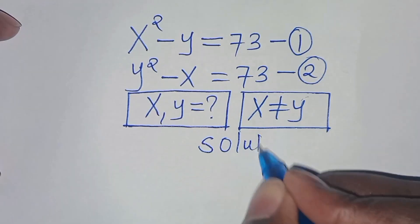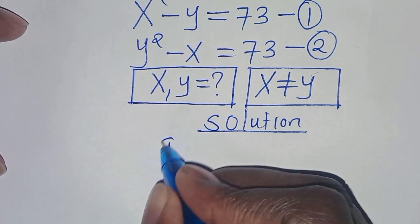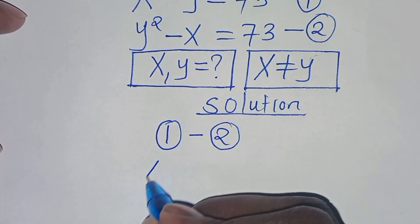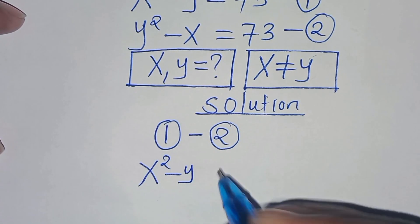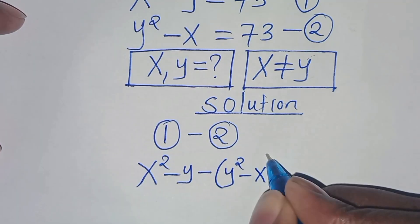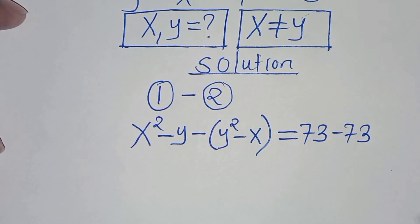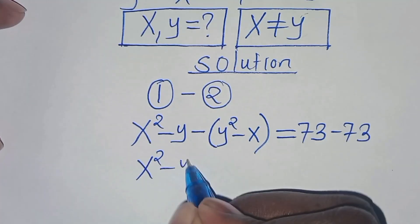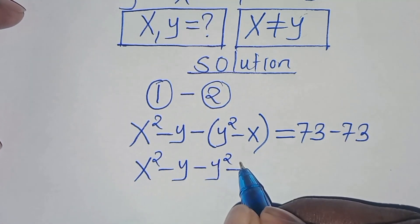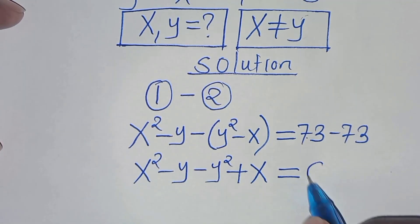Let's present the solution from here. The first step is to subtract equation 1 with equation 2. So we have from equation 1, x squared minus y, subtract equation 2, which is y squared minus x, across the parentheses, this is equal to 73 minus 73. So now here we have x squared minus y, let's open the parentheses. So minus y squared, then plus x, this is equal to 73 minus 73, which is equal to 0.